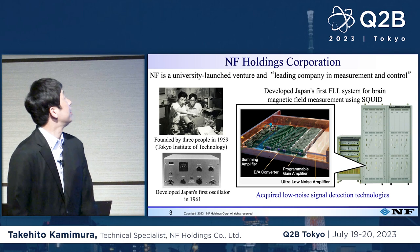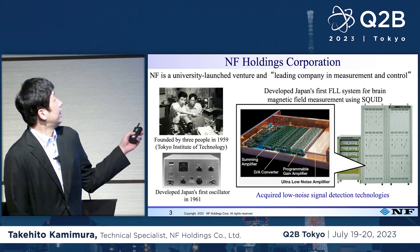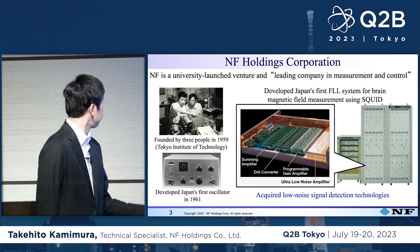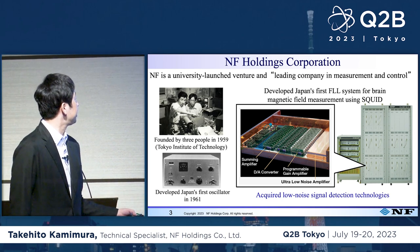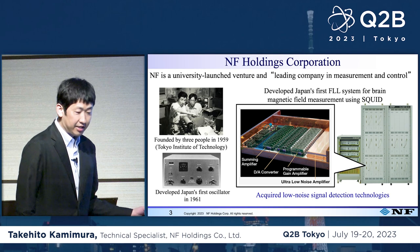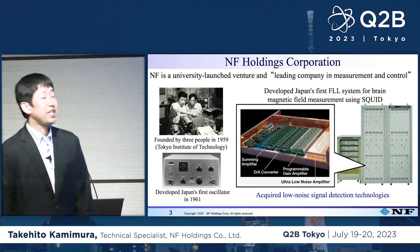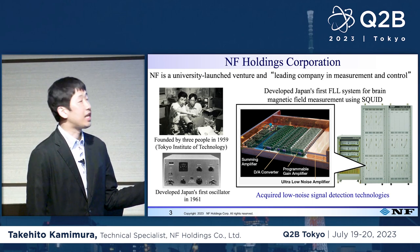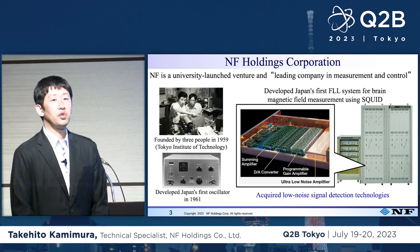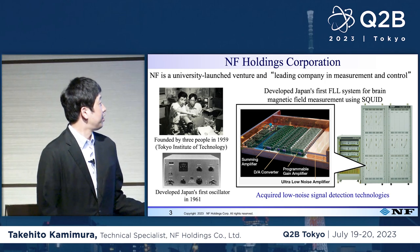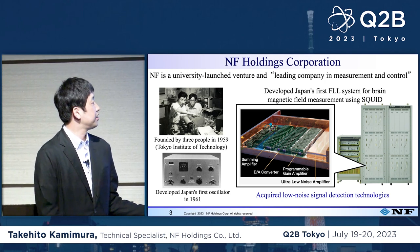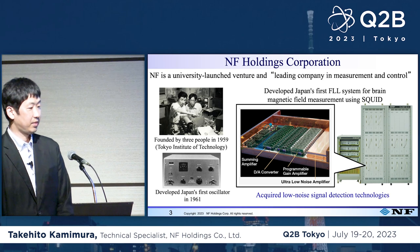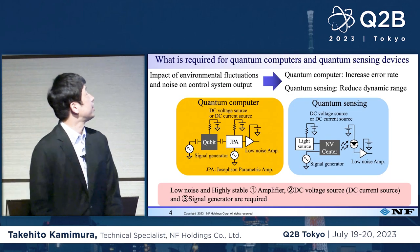This is our company. NF Holdings Corporation was founded from the university — it is the university's launch venture and leading company in measurement and control. It was founded in 1959, and then in 1961 we developed Japan's first oscillator. We also developed Japan's first FLL system for brain magnetic field measurement using a SQUID. NF Holdings has been building low noise signal detection technologies throughout its history.